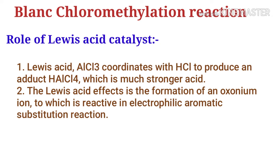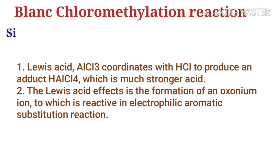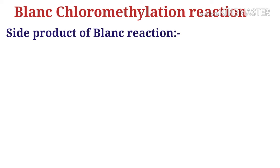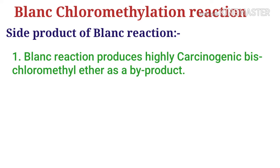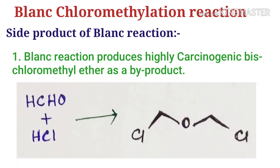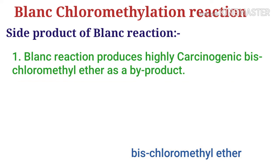What is the side product of the Blanc chloromethylation reaction? The reaction must be performed with high alertness because most chloromethylation reactions produce the highly carcinogenic compound chloromethyl ether as a byproduct. This is a highly carcinogenic complex. The overview of this side reaction shows that carcinogenic bis(chloromethyl) ether is formed when formaldehyde is treated with hydrogen chloride — the same reagents used in the Blanc chloromethylation reaction.